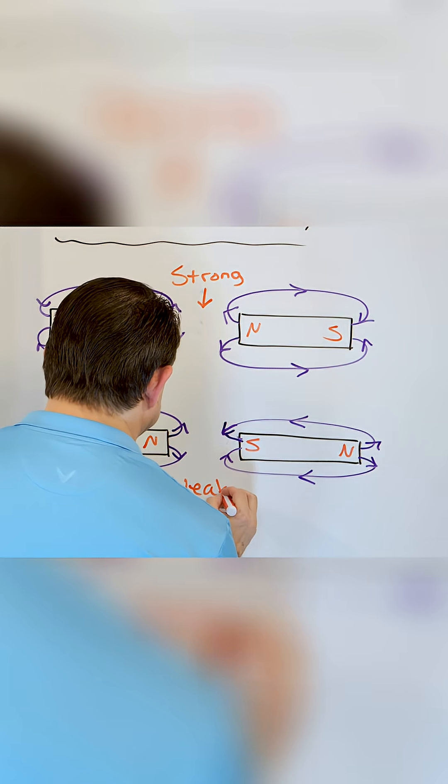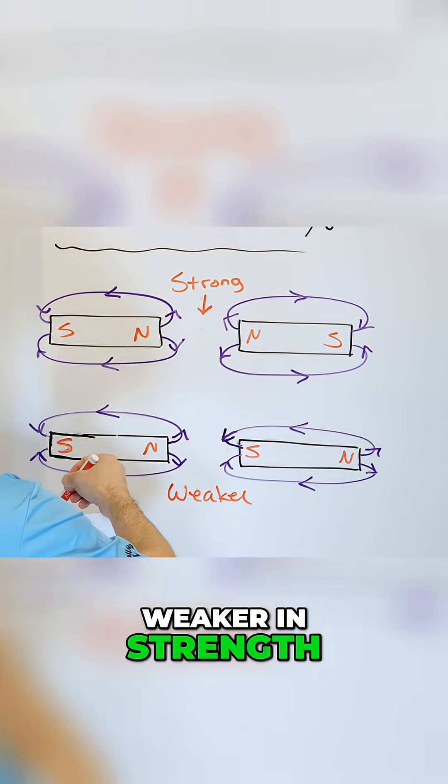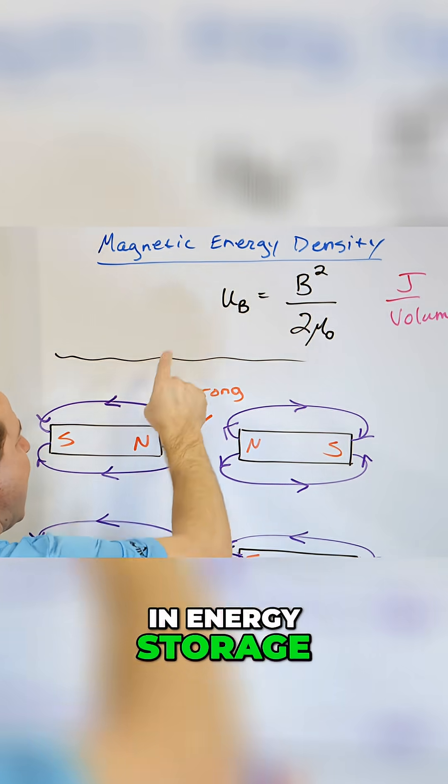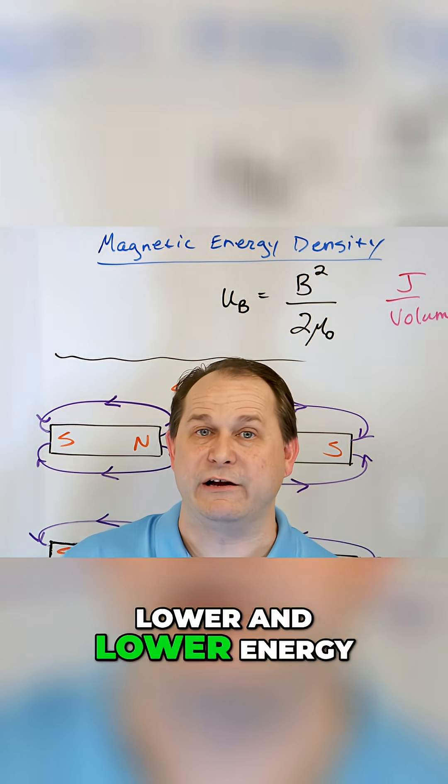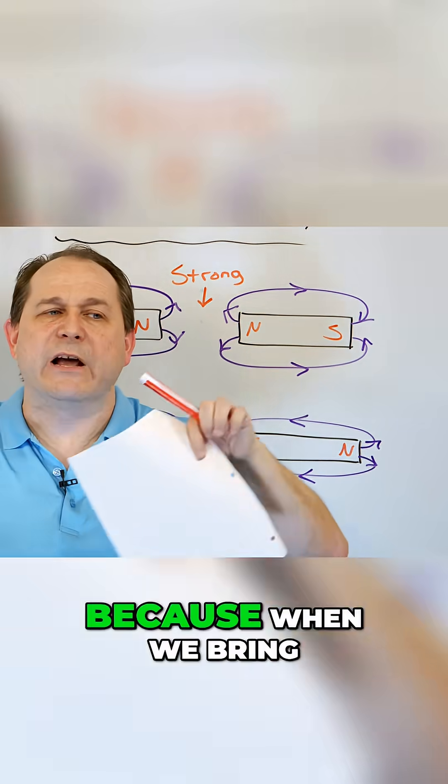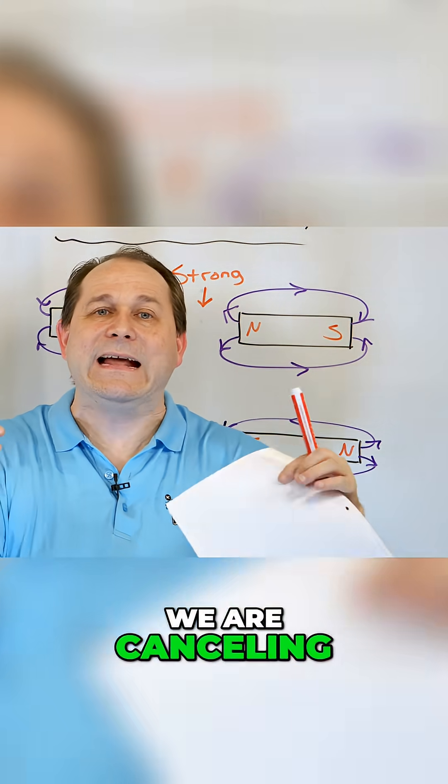So as I bring these guys together, the field gets weaker in strength. But weaker in strength means weaker in energy storage and remember the universe likes to go towards lower and lower energy storage. So two magnets attracting can be explained because when we bring those two poles of the magnet together we are canceling the magnetic field, making the magnetic field lower between them which is a lower energy state.